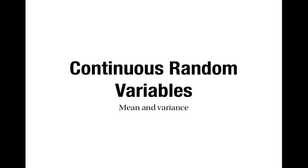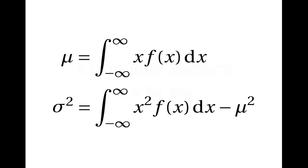This is the end of the video about finding the mean and variance of a continuous random variable. The key formulas to remember are: the mean is given by the integral of x·f(x) over all possible values of x, and the variance is given by the integral of x²·f(x) over all possible values of x, minus the square of the mean. I hope you found this video useful — thank you very much for watching.